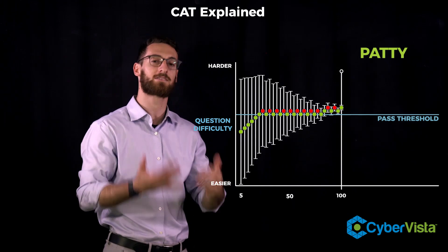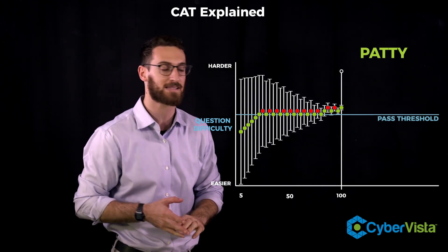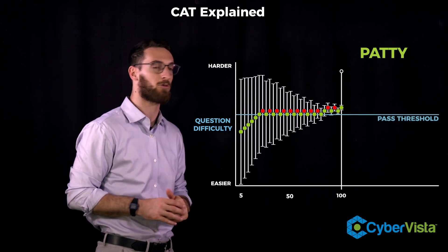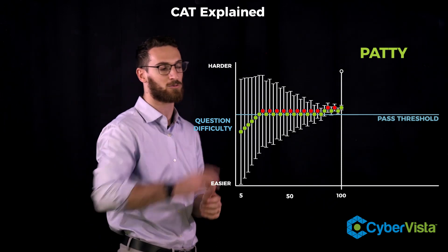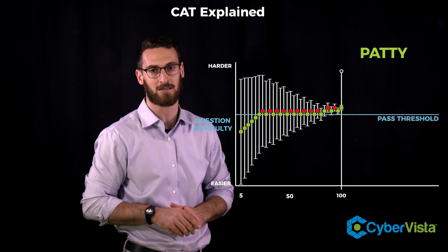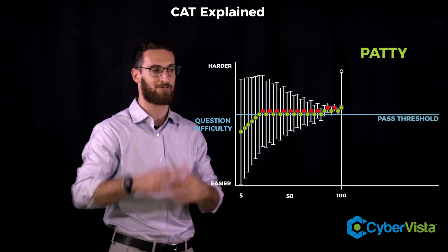Why? Because 100 questions is the minimum number of questions on the CISSP exam. And at that point, her overall score and confidence interval range is well above the passing threshold. So let me kind of translate that for you.